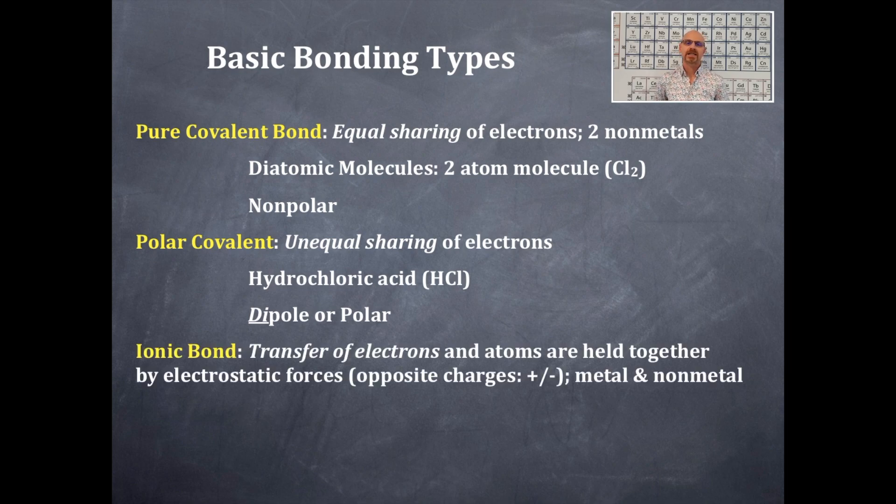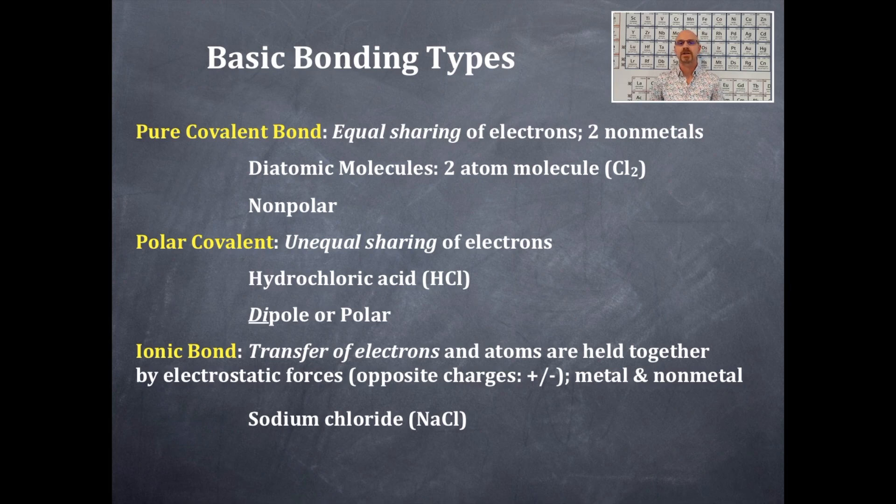Then the last bonding type which is the exact extreme of the pure covalent bond is an ionic bond. And an ionic bond you have a complete transfer of electrons. Those atoms now that are ions are held together electrostatically, just like the opposite ends of a magnet - one's positive, one's negative. You're going to have a metal and a nonmetal involved in this type of bonding. Sodium chloride, that's NaCl, is a perfect example of that. The sodium is the metal, the chlorine is the nonmetal, and there's a transfer of electrons or an electron in this particular case. This is an ionic bond.